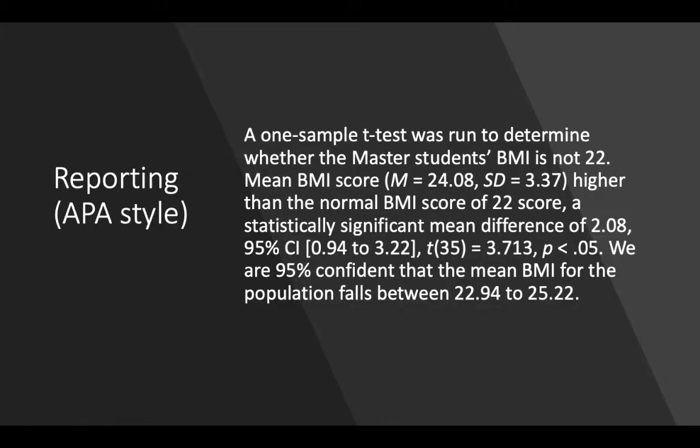So how do you write it in APA format? A one-sample t-test was run to determine whether the master student's BMI is not 22 or is 22. The mean BMI score, you have to write down the mean and the standard deviation, higher than the normal BMI score of 22, a statistically significant mean difference of 2.08 at the 95% confidence interval between 0.94 to 3.22, t with the df of 35 equals to 3.713 with a p-value of less than 0.05. We are 95% confident that the mean BMI for the population will fall between 22.94 to 25.22.